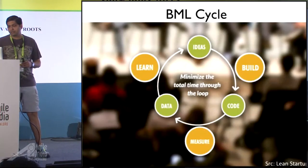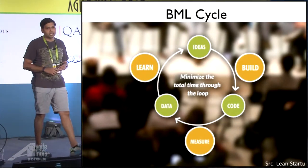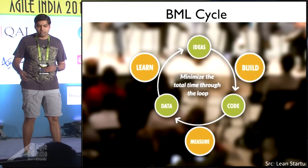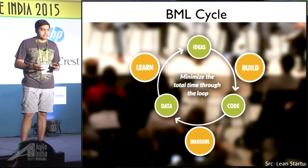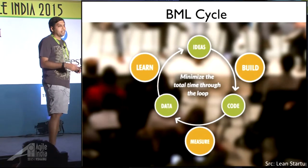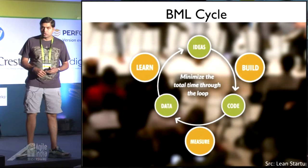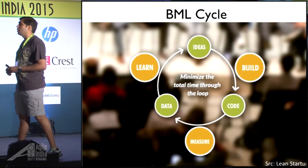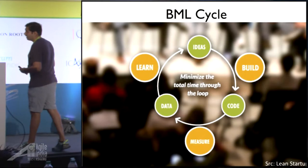Where this comes from is the Build-Measure-Learn cycle. You have an idea, you build something which produces code. You measure — once you deploy that, how things are working, you collect data. Based on the data, you have some learning. The idea is to go through this loop as quickly as possible. That's in a nutshell what the lean startup Build-Measure-Learn cycle is.